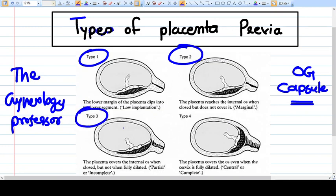Type 3 is when the placenta covers the internal os when closed but does not cover when it is fully dilated. So when the os is fully dilated, the placenta will not cover all the os. It is incompletely covering the os. That is type 3.